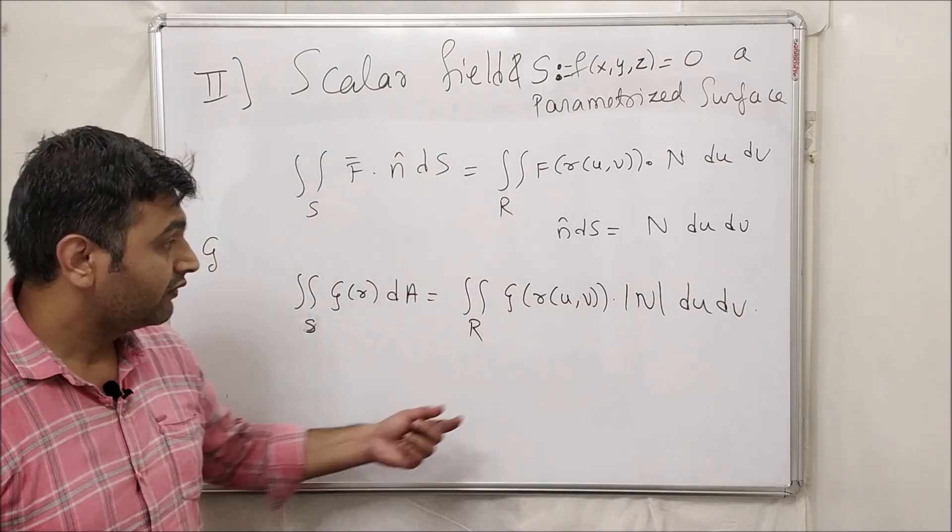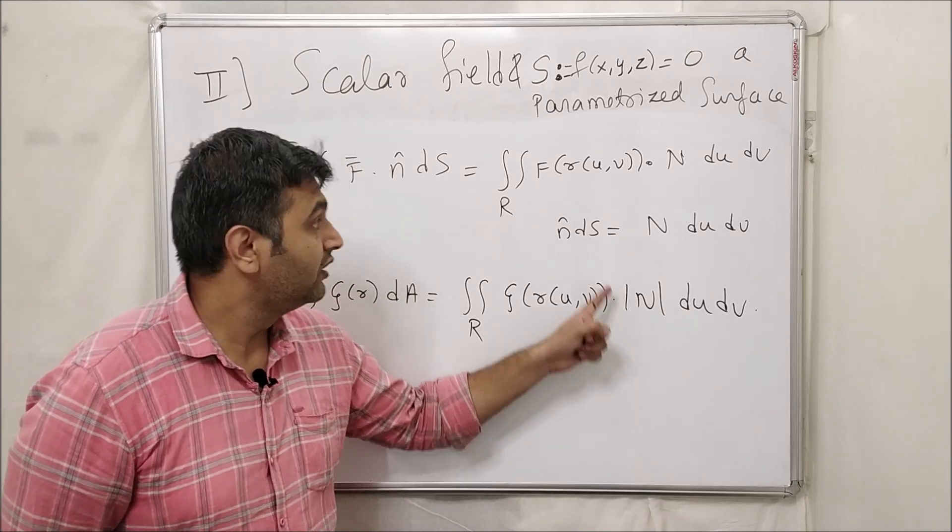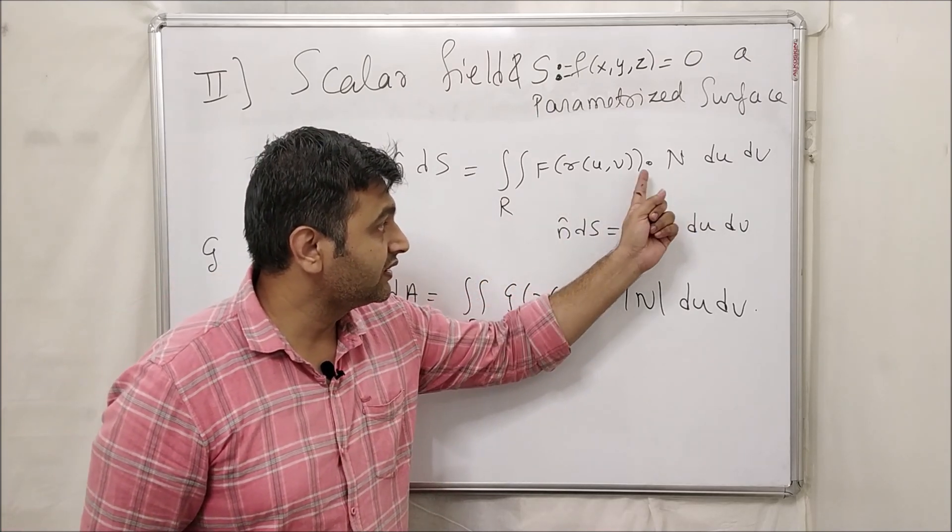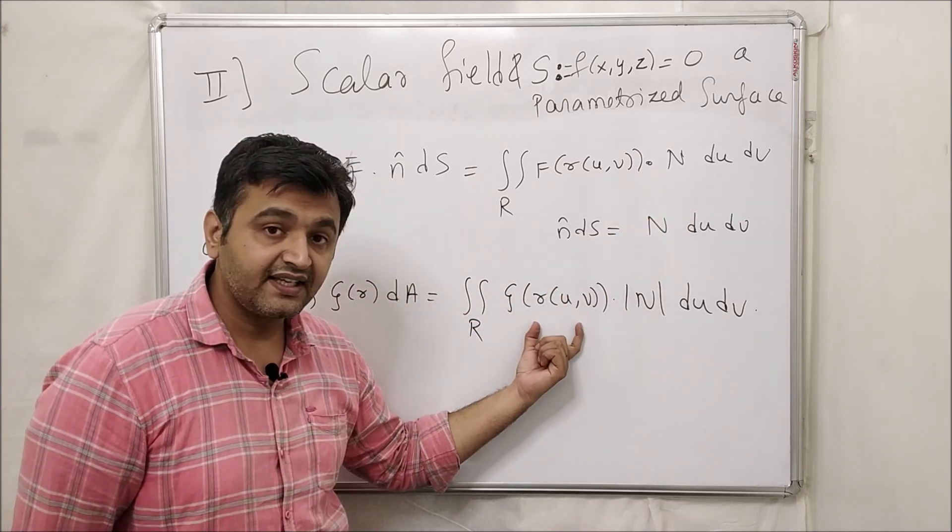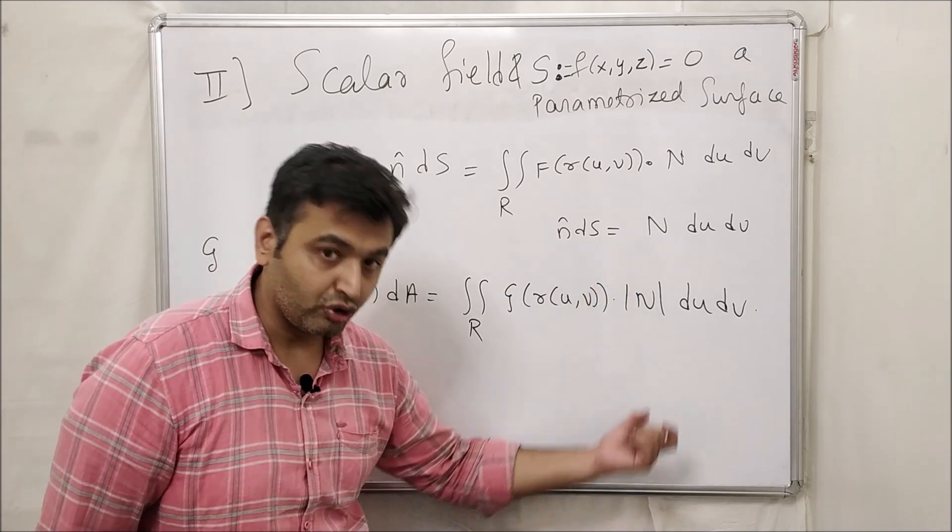And then this will replace by mod n into du dv. Now here we take mod n because this is a scalar thing, so I can't take a dot product here. This was a vector, this was a vector, so dot product makes sense. Here this is a scalar, so I can't take dot product with normal vector, so we take into mod.